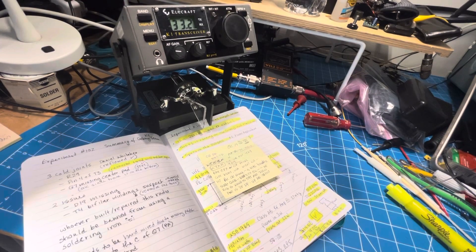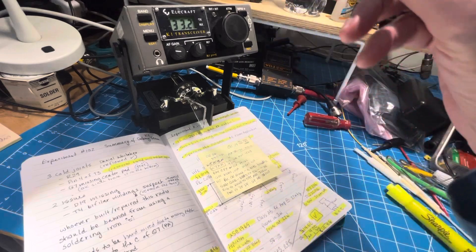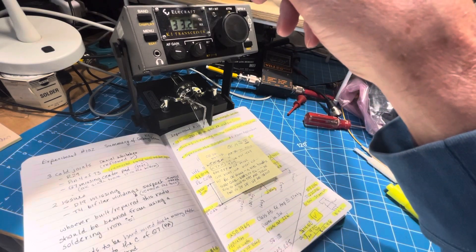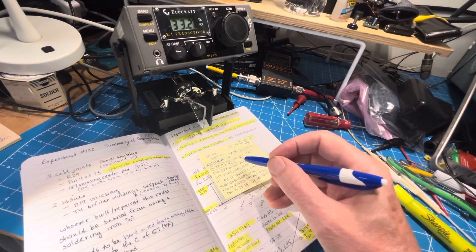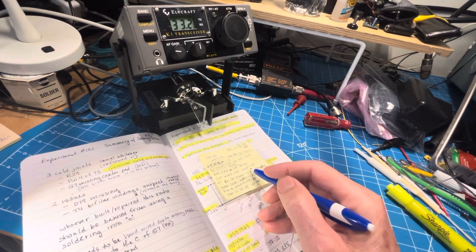Thanks for joining me. A couple of updates to share. K1 serial number 779 was just successful in getting from San Jose to Kent, Washington.